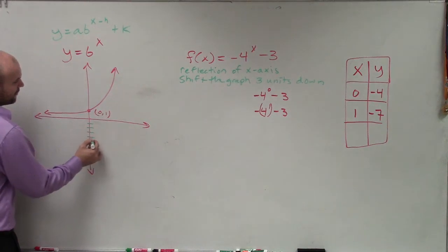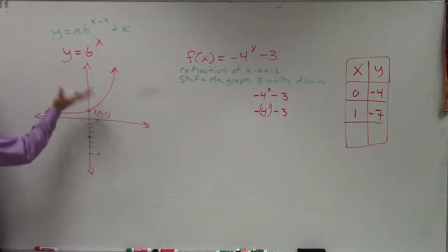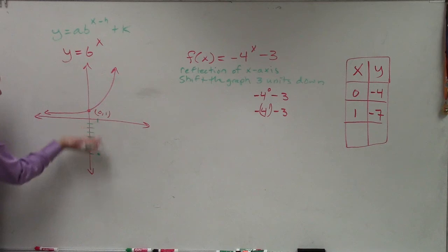So 1, 2, 3, 4. And 1, negative 7. 1, 2, 3, 4, 5, 6, 7.